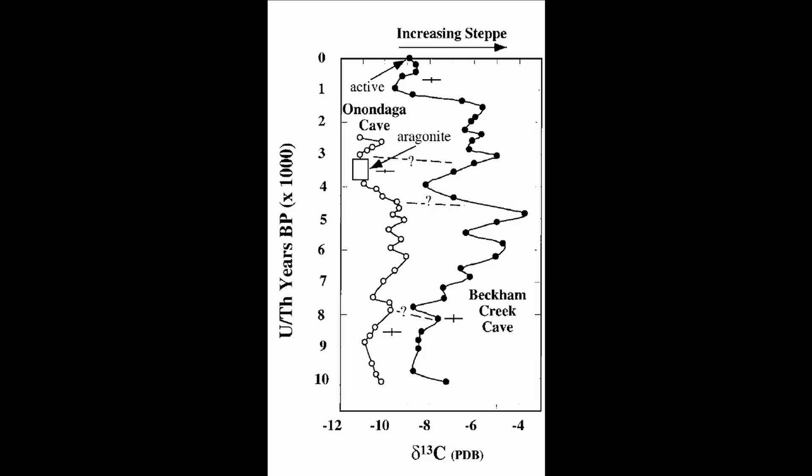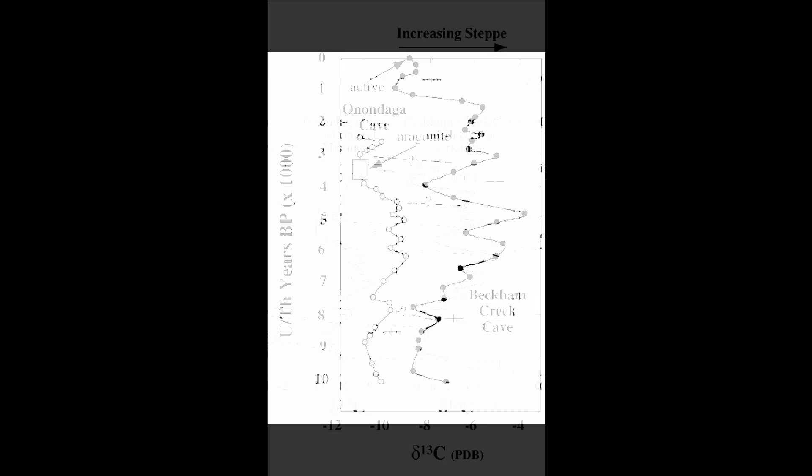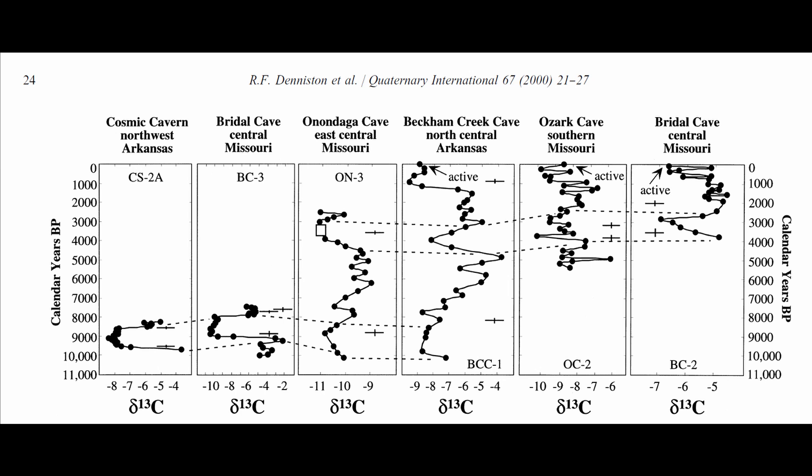Not unlike trees, speleothems grow by adding layers to the exterior, so the inside is much older than the outside. These layers can be dated using a uranium-thorium dating method, which is similar to radiocarbon dating. About 20 years ago, several studies by Ron Deniston and colleagues analyzed speleothem samples from several caves in the Ozarks — predominantly Missouri and Arkansas. They found evidence for grassland expansion in those speleothems — that increasing C13 signature. And because they took samples from multiple areas across the region, they were also able to see that the changes didn't all start at the same time: changes appear to have started in the eastern Ozarks, then the southwest, and finally the northwest part of the Ozarks.